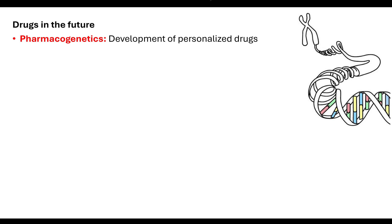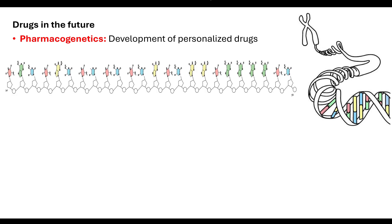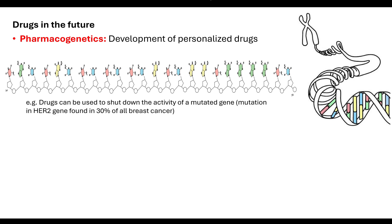There are other things we can do with regards to medicines and drugs in the future. There is such a thing called pharmacogenetics, where they are developing personalised drugs. This means looking at the genetic material of the patient and the genetic material of the pathogen to find a way to produce a drug effective only against those key parts. For example, 30% of people who suffer from breast cancer have a mutation in the HER2 gene. Drugs can be used to inhibit the expression of this mutated gene to prevent the further development of breast cancer.